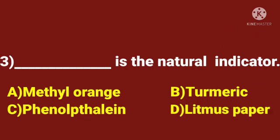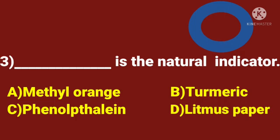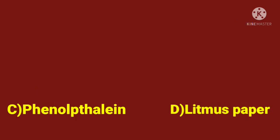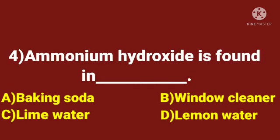Third question. Dash is the natural indicator. A. Methyl orange. B. Turmeric. C. Phenolphthalein. D. Litmus paper. Time starts now. The answer is turmeric. Turmeric is the natural indicator.